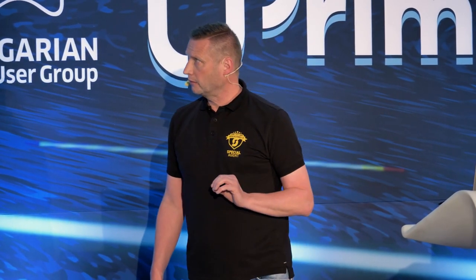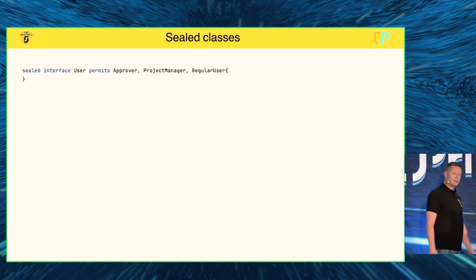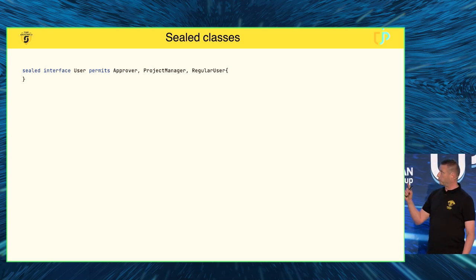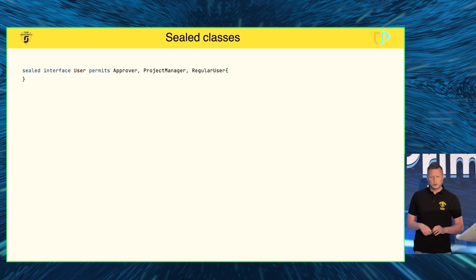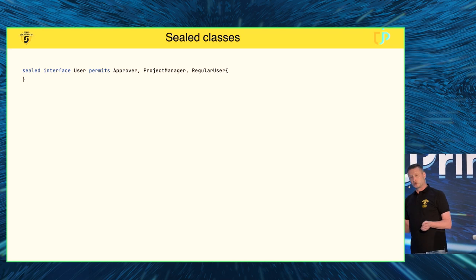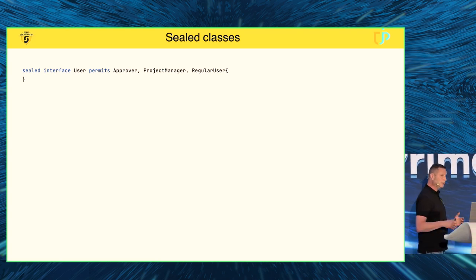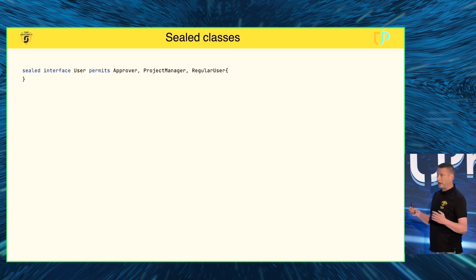With sealed classes, you have the ability to determine yourself who is allowed to inherit from you. The same applies to sealed interfaces. So this is a sealed interface, and I'm saying this interface User only has three permitted subtypes: Approver, ProjectManager, and RegularUser. If any other class tries to implement this interface, the compiler will complain — so you have complete control over who inherits from your data.